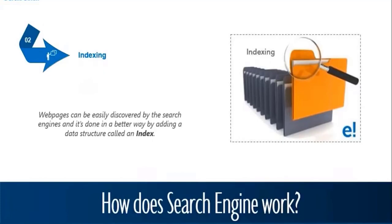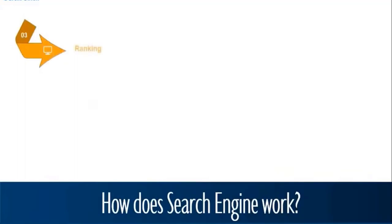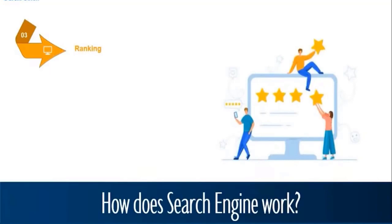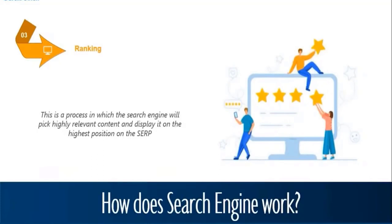In the final step, search engines sort through indexed information and return the right results for each query using search algorithms — rules or mathematical models that analyze what the searcher is looking for. Algorithms use numerous factors to define the quality of pages, including popularity of content, qualitative user experiences, backlink quality, mobile friendliness, freshness of content, engagement on the page, and page speed.